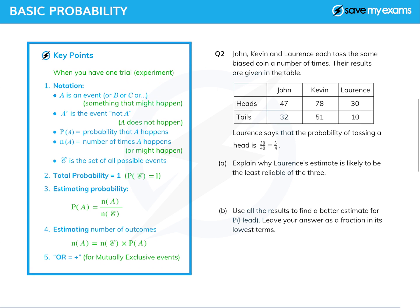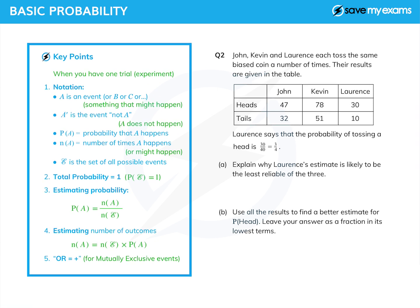Right, let's move on to a second question. This time, John is joined by Kevin and Lawrence, and they each toss the same biased coin a number of times. And here's their results. Okay, we've got heads and tails, John, Kevin and Lawrence, and we see what they've done.